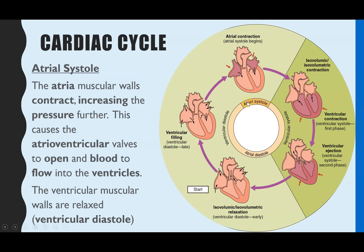Moving on to atrial systole. At this stage the ventricles are still in diastole — still relaxed — but now the atria contract, or are in systole, shown by the darker purple on the diagram. As the atria contract, the volume of the atria decreases. If the volume decreases, the pressure increases, and that increase in pressure behind the atrioventricular valves forces them open, so blood starts to pour into the ventricles.